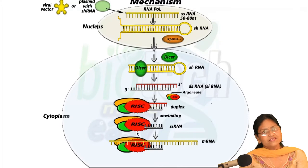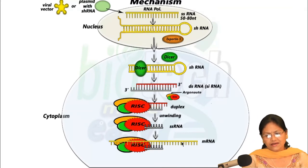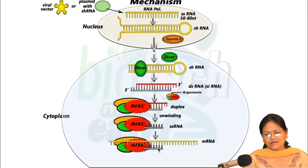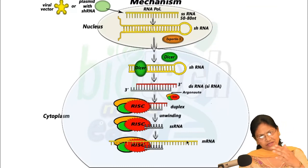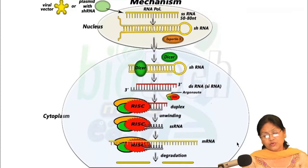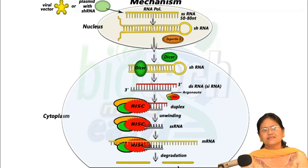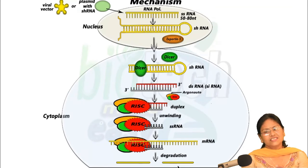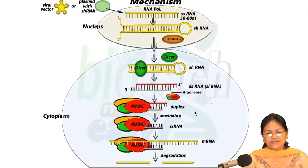This single-stranded RNA guides RISC to scan for the messenger RNA that is complementary to it. As soon as it finds that messenger RNA — you can see the mRNA which has a portion complementary to this shRNA — pairing takes place. The result is that protein formation is blocked and the messenger RNA is degraded. Once the messenger RNA is degraded, the gene silencing takes place.